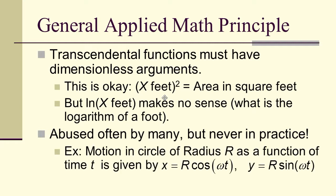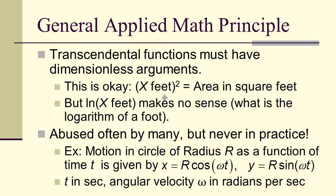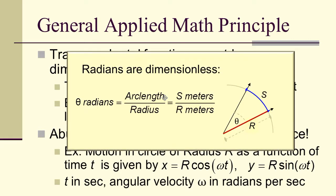For example, suppose you've got motion in a circle of radius R as a function of time t. That can be written as x = R cos(ωt), y = R sin(ωt). t is in seconds, so therefore the angular velocity is in radians per second, meaning ω × t is dimensionless. Radians are dimensionless because if I've got an arc length S subtending an angle θ along a circle of radius R, then θ in radians is the arc length over the radius — S meters over R meters, and the meters cancel. Radian measure is dimensionless.